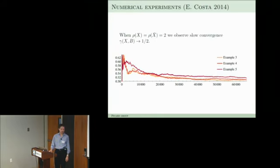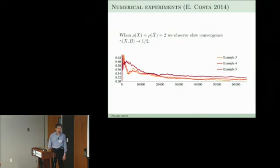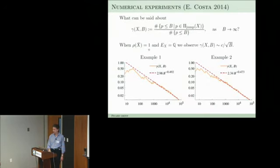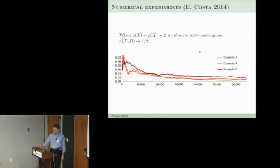In Picard rank 2 there is completely different behavior — no square root of B. What we are seeing is a slow convergence to one half. We don't really have an explanation for that, but we have many other examples in higher ranks as well. These experiments for rank 1 and rank 2 — these are not Kummer surfaces — show that roughly half of the primes are jumping primes in rank 2.